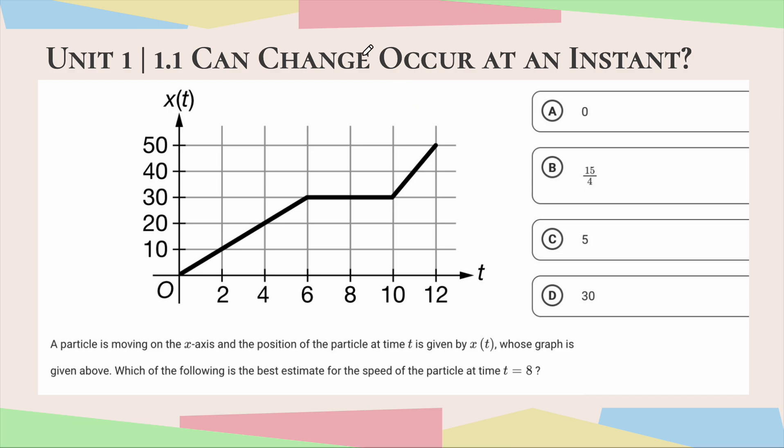So this question here provides us with this graph, and it states a particle is moving on the x-axis, and the position of the particle at time t is given by x of t. So this over here, our y-axis, gives the position of the particle.